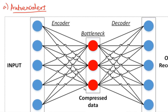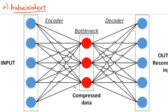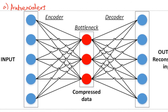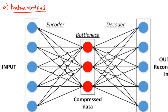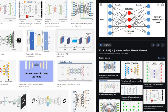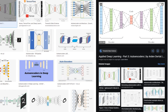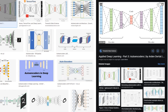Looking at the auto encoder diagram: this is the input layer, and then these are the layers in between. I was looking for a better auto encoder image — let's try this one here.